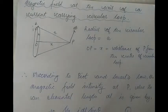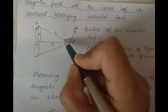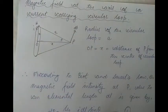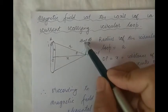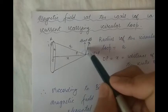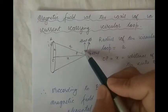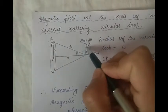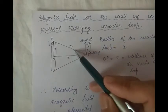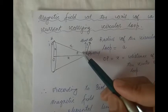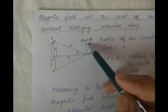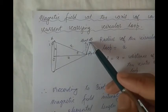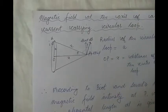We can resolve this vector dB into two mutually perpendicular components. Let this angle be phi. Since dB and R are at right angles to each other, if this angle is 90 minus phi, the other angle has to be phi. So we can resolve dB into two mutually perpendicular components: dB cos φ and dB sin φ.